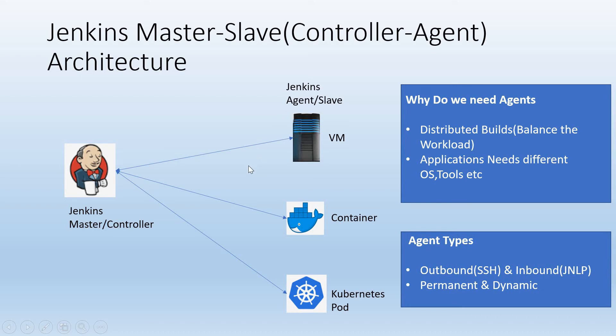In the inbound case — for example, if we take Windows machines — generally we don't have SSH. So for Windows machines, we need to create the agent or slave inside our Windows VM, and that agent will initiate the connection to the master. Generally this type of agent is done using JNLP, which is also called Java Network Launch Protocol, where the application launch happens in the slave from the server. We'll see JNLP and outbound in detail when we set up actual agents.